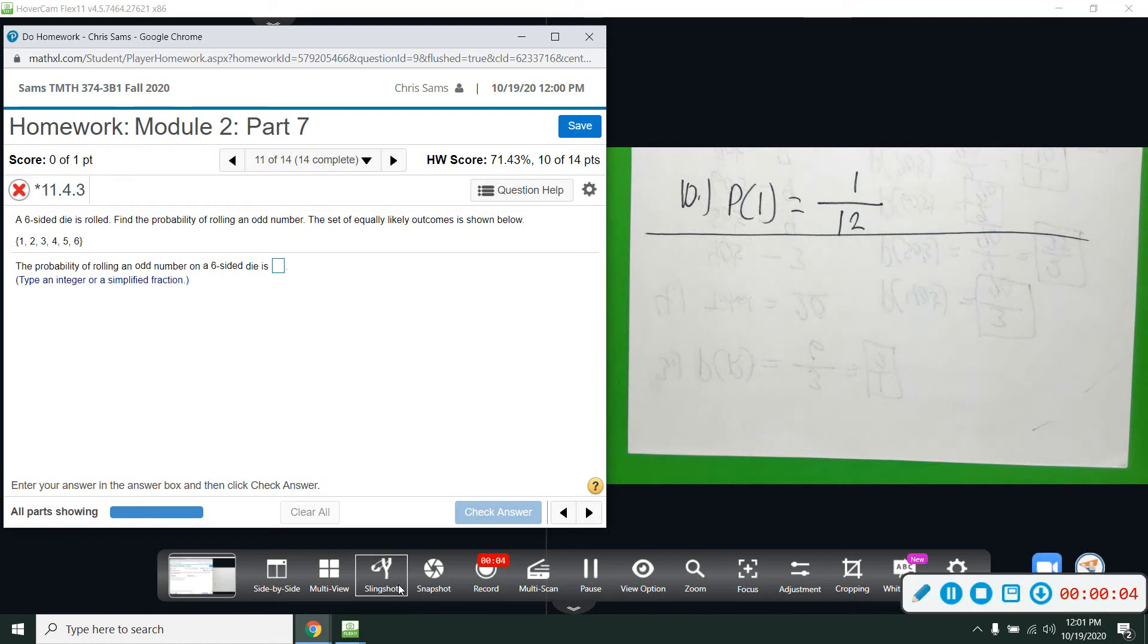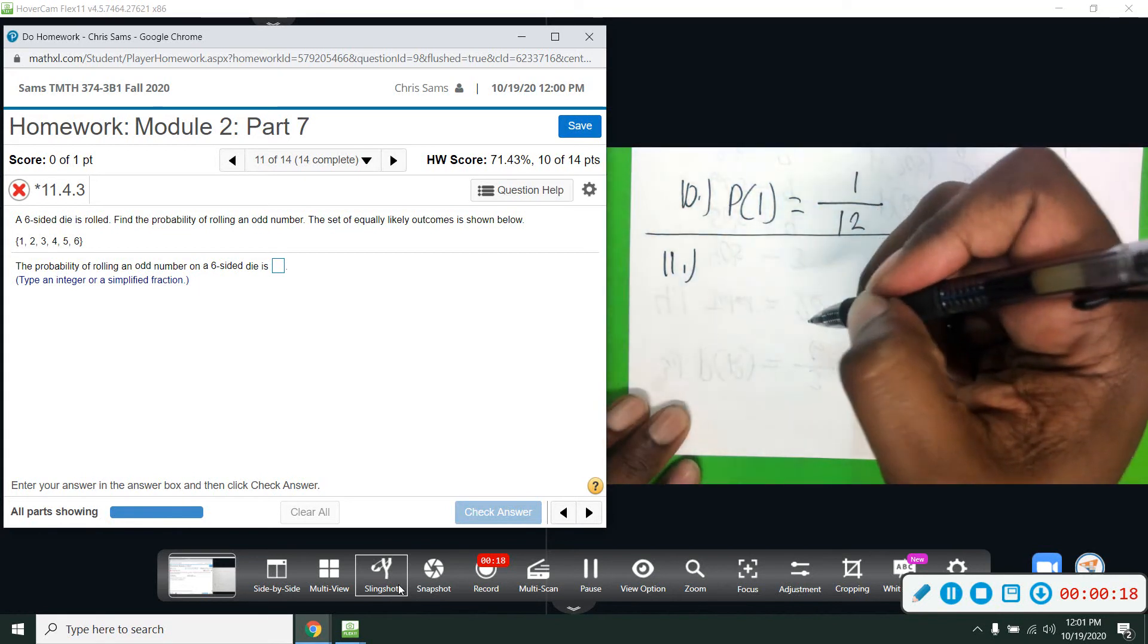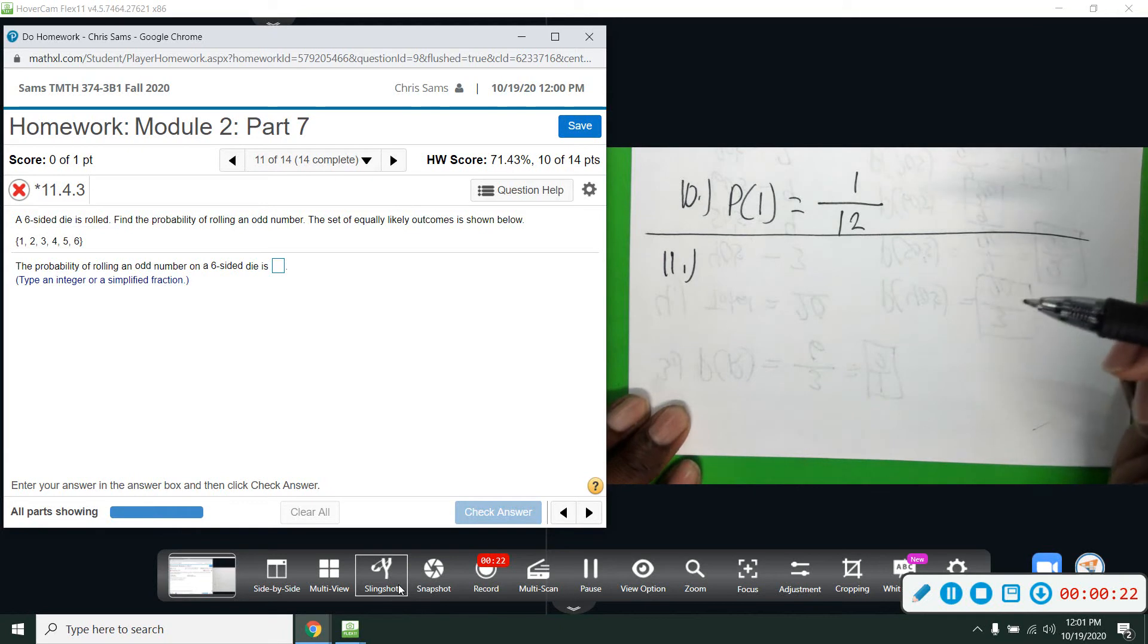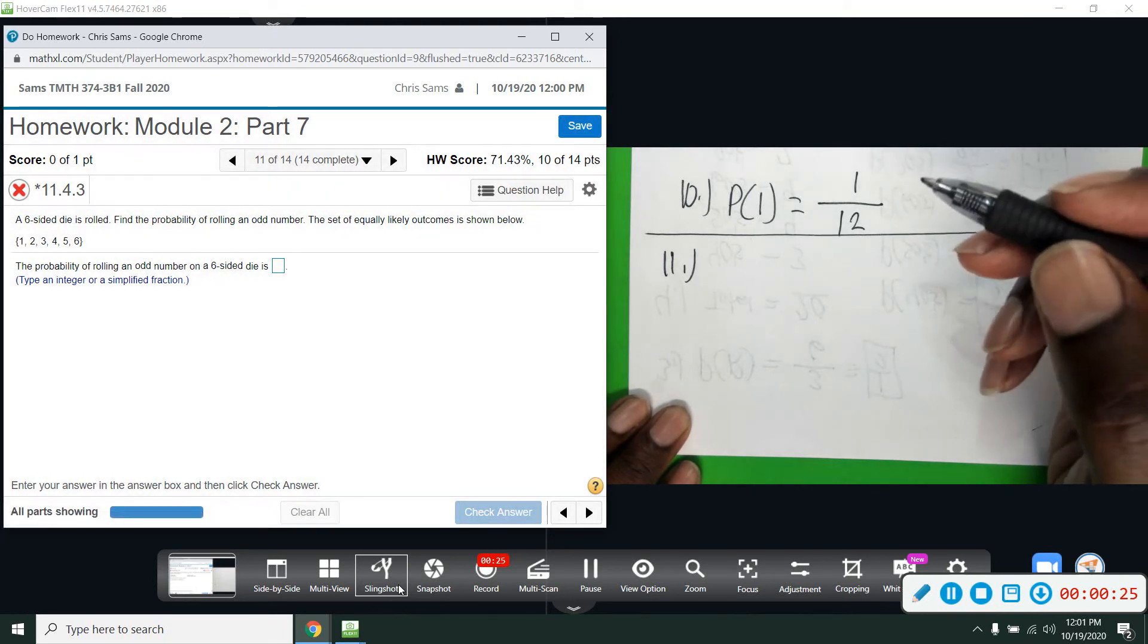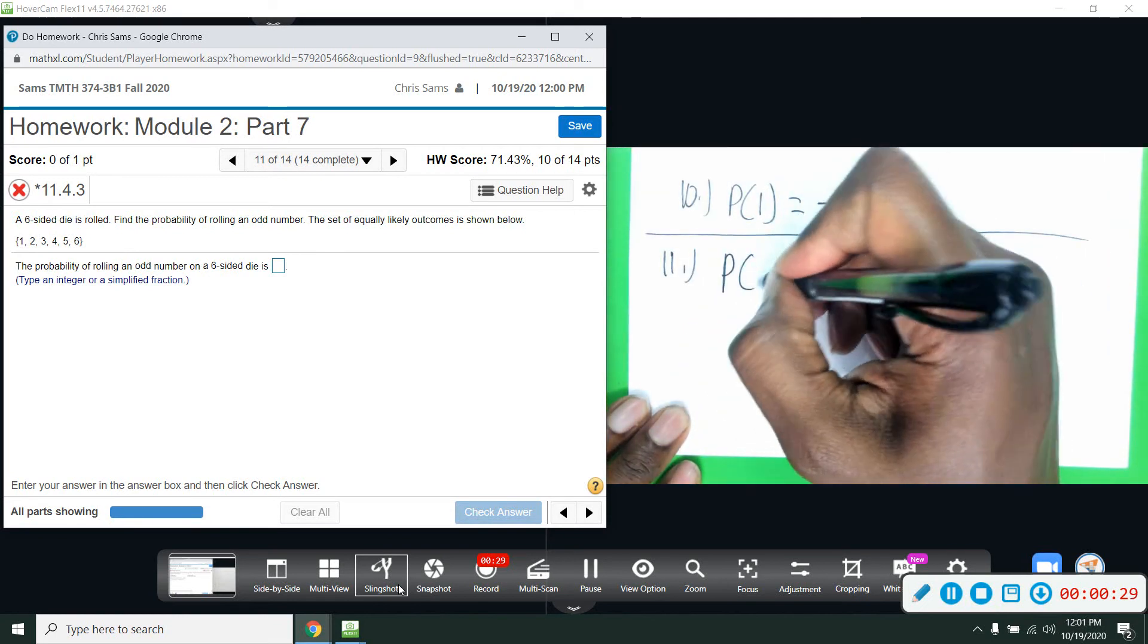Number 11: A six-sided die is rolled. We want to find the probability of rolling an odd number. A set of equally likely outcomes is shown below. So we have a six-sided die, a standard die. If it's a pair, we call it dice. If it's one, we call it a die. So just one die, and we want to know the probability of rolling an odd number.